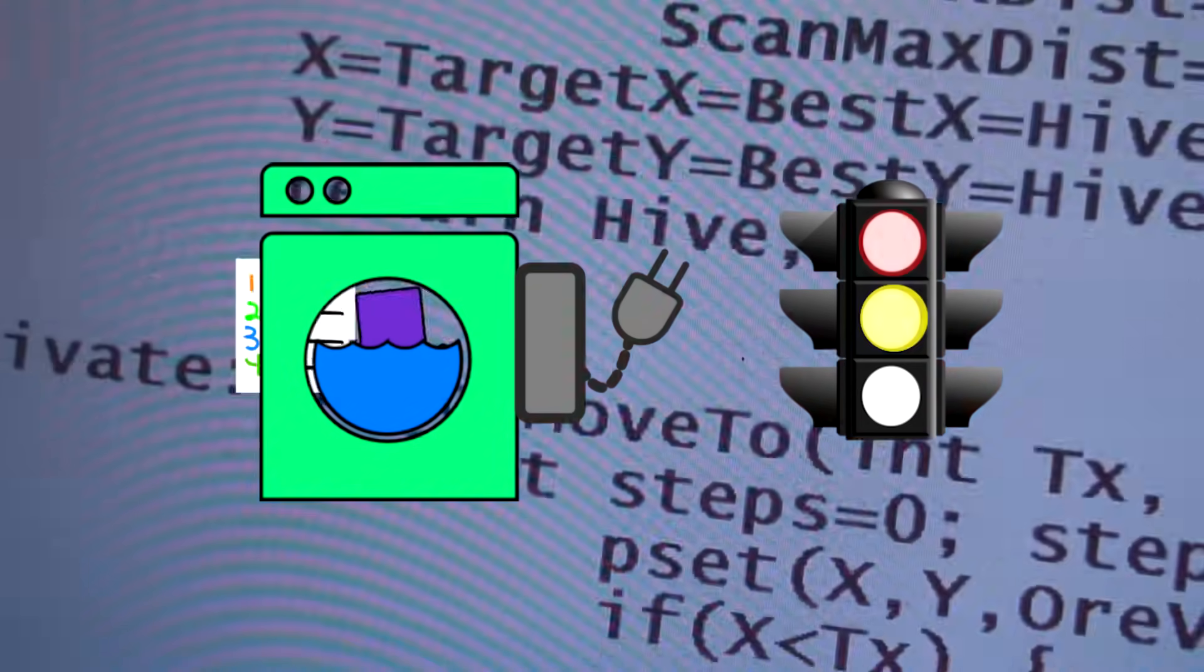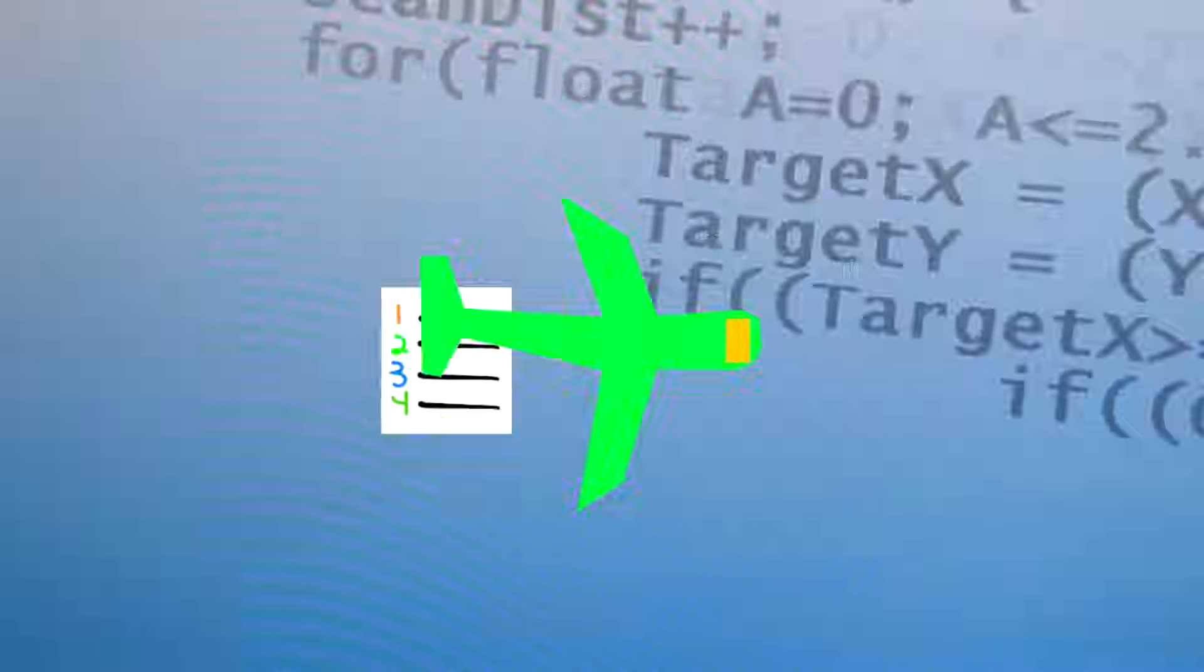Just about anything with a plug or battery uses code. It's keeping our airplanes in the air. It's allowing you to swipe a credit card. And the computer doesn't know what to do in any given situation. It has to be taught everything.